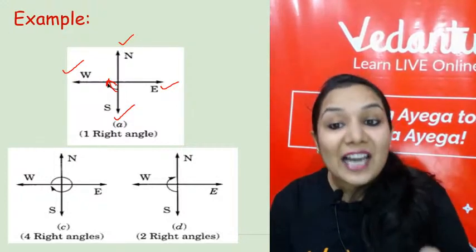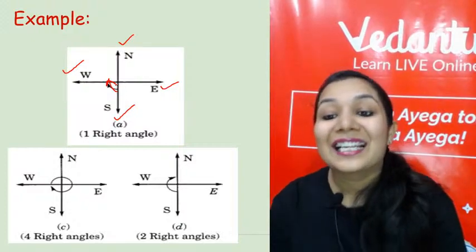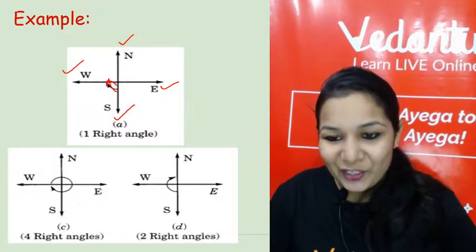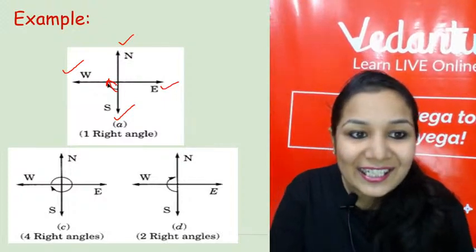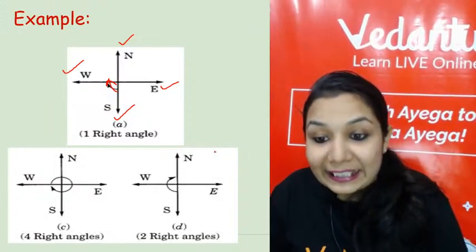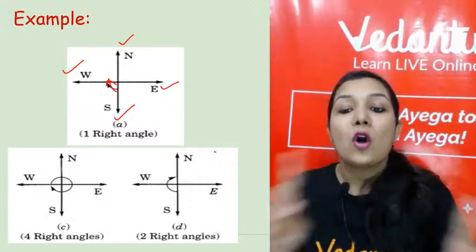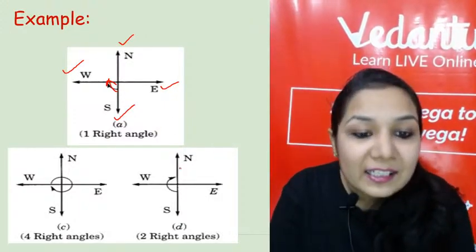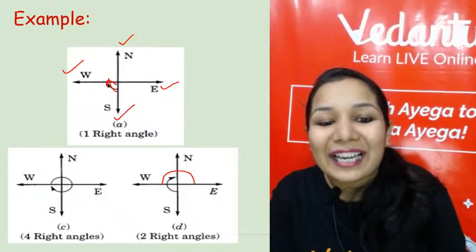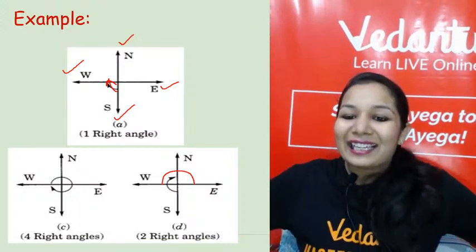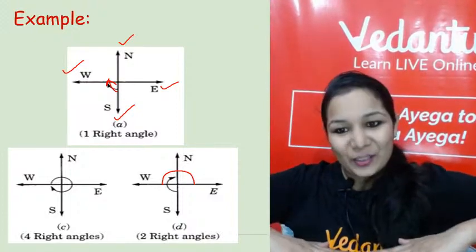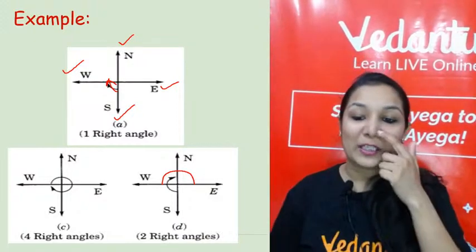Another question: if I start from west and take two right angles, where will I reach? One right angle from west reaches north, and the other right angle reaches east. So two right angles make a straight angle — starting from west, taking two right angles, you reach the opposite direction: east.